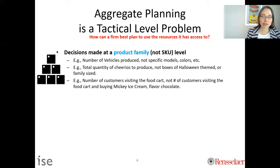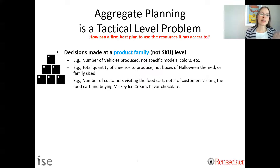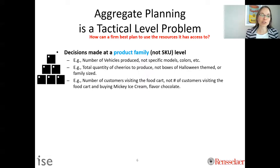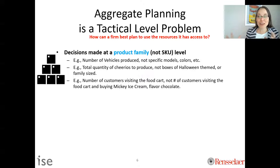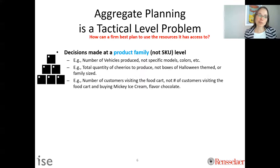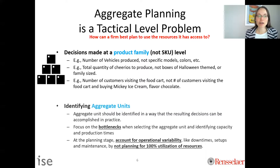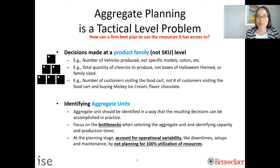In a service sector example like Disney World, you'd want to estimate how many customers you can serve at a food cart, not the number of customers buying a Mickey Mouse chocolate ice cream. Those more granular details are needed at operational levels. We're going to do this planning at what's sometimes called an aggregate unit, which is usually a product family.